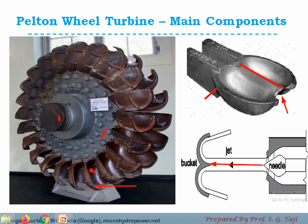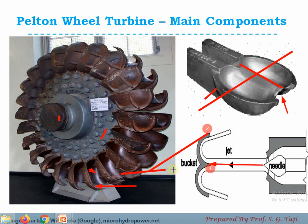Taking a cross-section of the bucket, the jet of water comes horizontally and strikes at the splitter. After striking, it gets divided into two halves, and both halves follow the contour of the bucket and get deflected at the outlet point. The first point where the jet strikes is the inlet point, and the point from where the jet comes out is the outlet point. The angle of the bucket at inlet is the inlet tip angle, and the angle at the outlet point is the outlet tip angle — both measured with respect to the direction of motion.